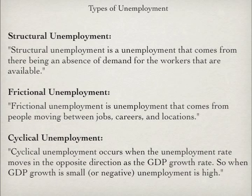Cyclical unemployment occurs when the unemployment rate moves in the opposite direction as the GDP growth rate. So when GDP growth is small or negative, unemployment is high.